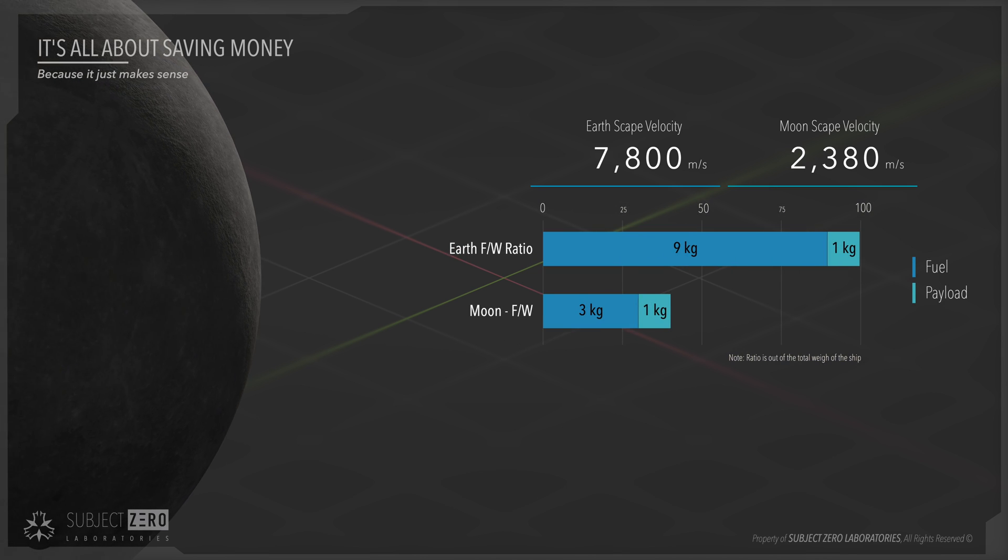Then we need to consider the payload. For every 1 kilo of payload, you will need only 3 kilos of propellant, which on Earth you need 9. That is a savings of more than 66% in terms of fuel consumption.